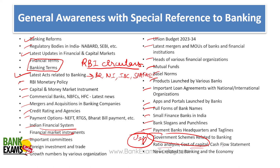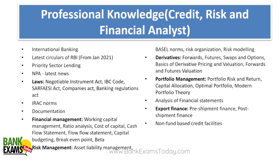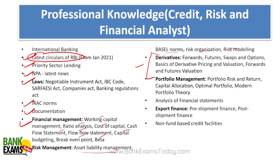For financial analyst, additional topics include ratio analysis, cost of capital, and cash flow. In professional knowledge, important areas are: latest banking circulars, priority sector lending, NPA laws, IRAC norms, documentation, financial management covering working capital management, ratio analysis, cost of capital, cash flow statement, fund flow statement, capital budgeting, and break-even point. For risk management: asset liability management, Basel norms, risk organization and risk modeling, derivatives — forwards, futures, swaps, options, pricing and valuation of derivatives — portfolio management including portfolio risk and return, capital allocation, optimal portfolio, and modern portfolio theory.